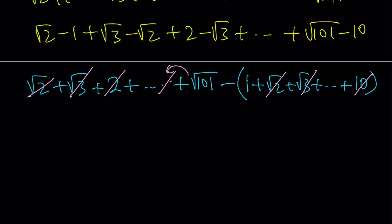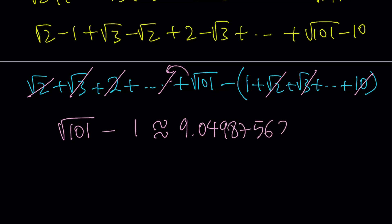So what do we have left? We have square root of 101, and in the second group only 1 remains. So the answer is square root of 101 minus 1. You can estimate square root of 101 as around 10-point-something. The exact numerical value: square root of 101 is about 10.04, so when we subtract 1 it gives us approximately 9.0498756211.